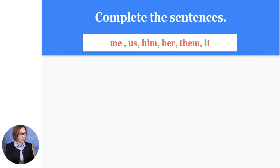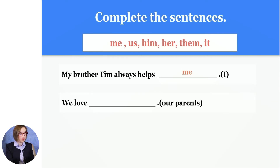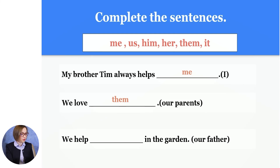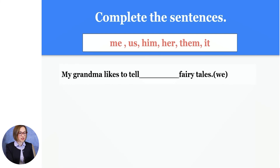Now let's complete the sentences with the pronouns: me, us, him, her, them, it. The first sentence: My brother Tim always helps (I) — helps me. My brother Tim always helps me. We love (our parents) — we love them. We help (our father) in the garden — we help him in the garden. My grandma likes to tell (we) fairy tales — my grandma likes to tell us fairy tales.